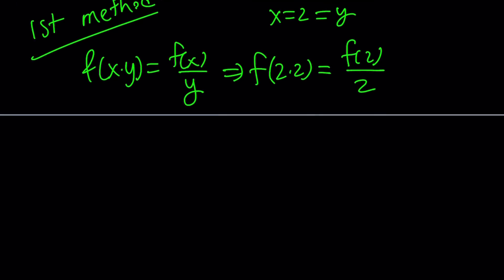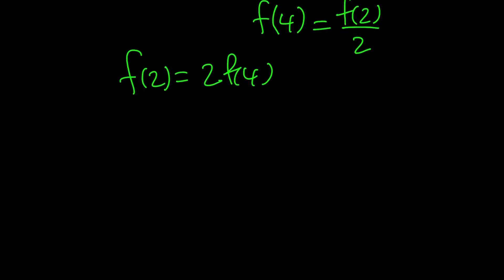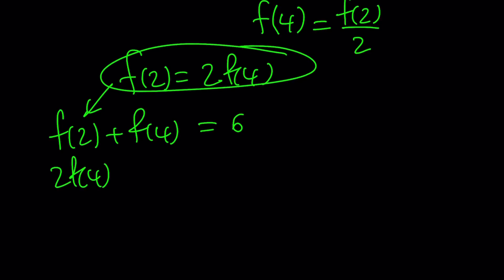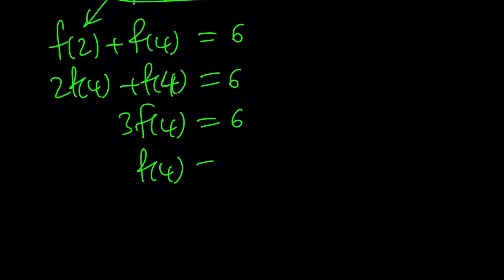So f(2 times 2) is equal to f(2) divided by 2. But what is f(2 times 2)? That is f(4). f(4) equals f(2) divided by 2. What does that mean? If you cross multiply, f(2) becomes 2 times f(4). So whatever f(4) is, f(2) is just going to be twice the value. But guess what? We were given an equation that puts them together. So we know f(2) plus f(4) is equal to 6.